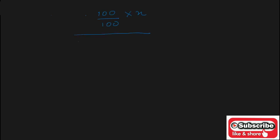Now solve this: x plus 400 percent of x is x plus 400 upon 100 of x, whole divided by y plus 500 upon 100 into y. Cancelling zeros, the numerator becomes x plus 4x and the denominator becomes y plus 5y, giving us 5x upon 6y.